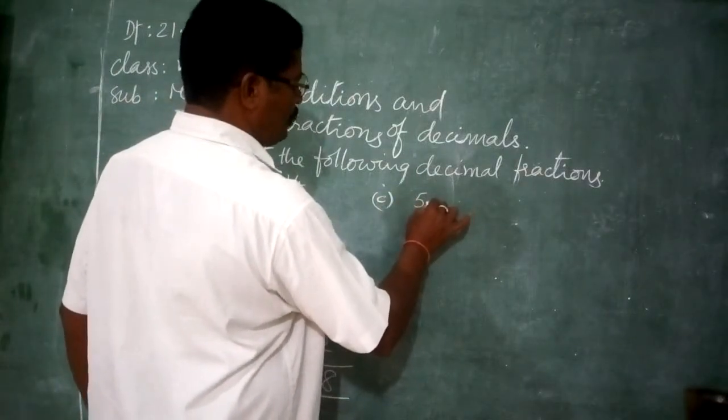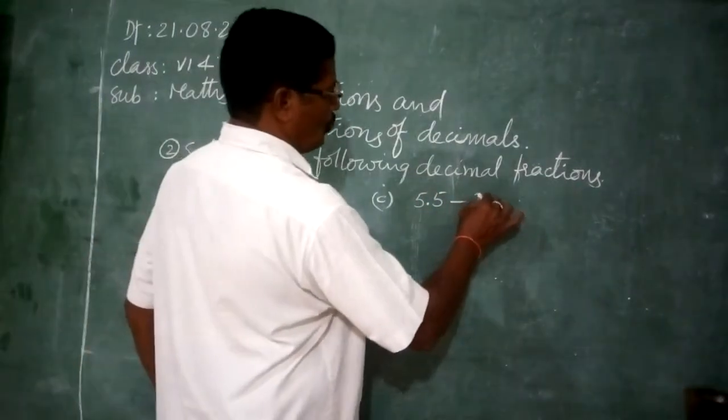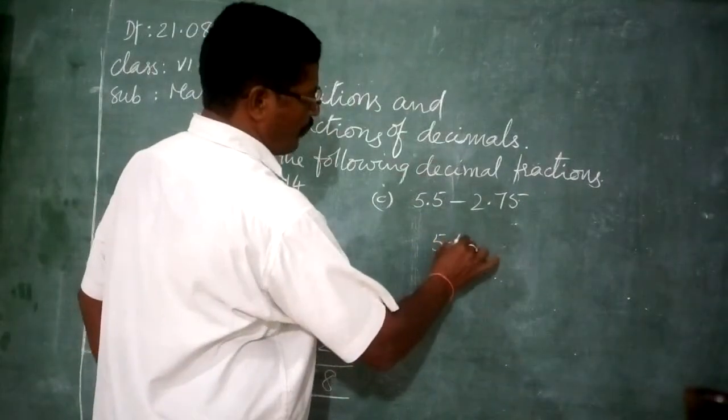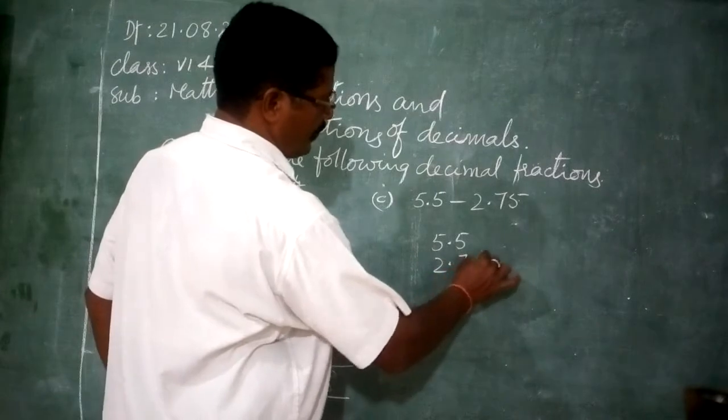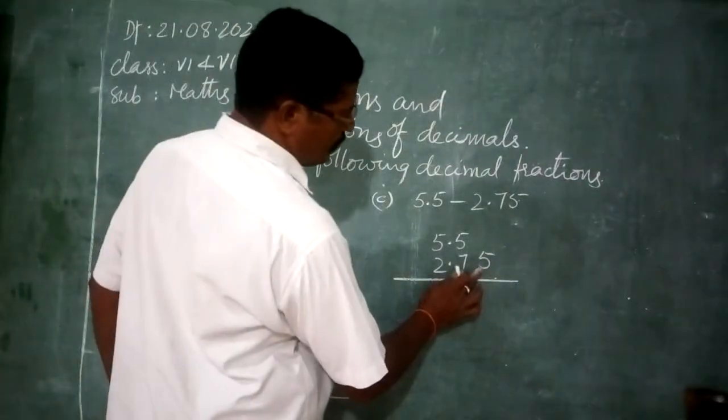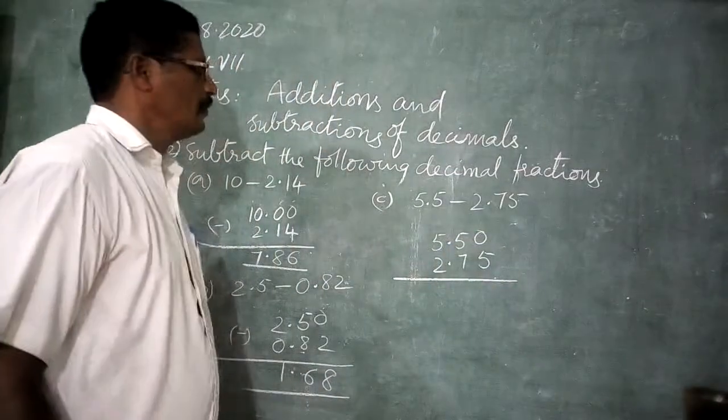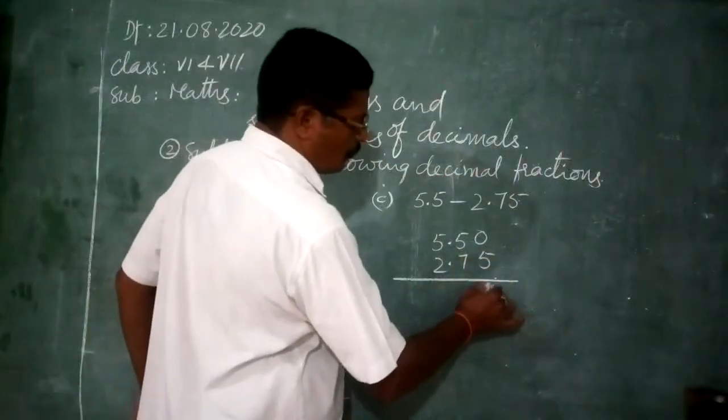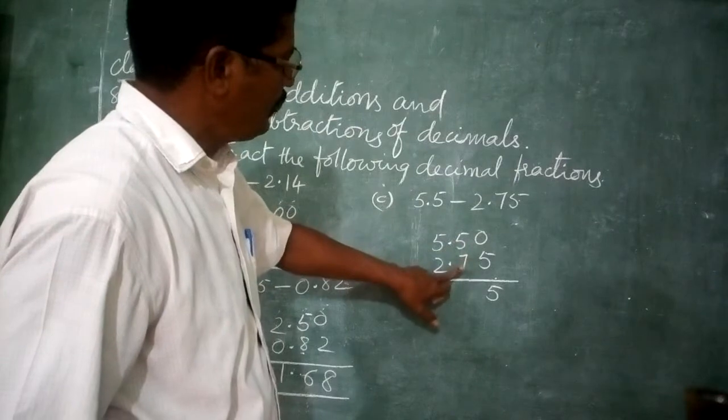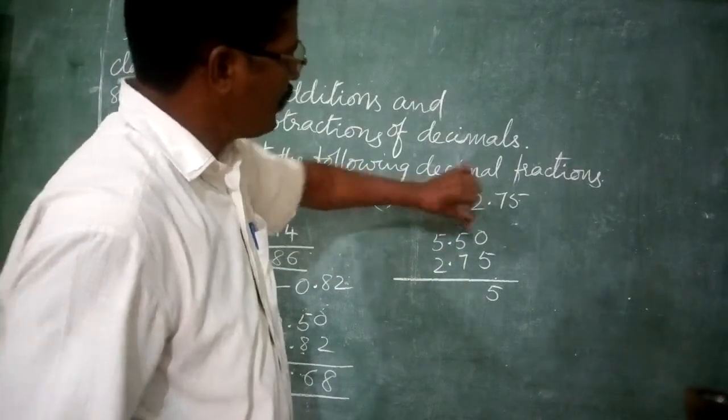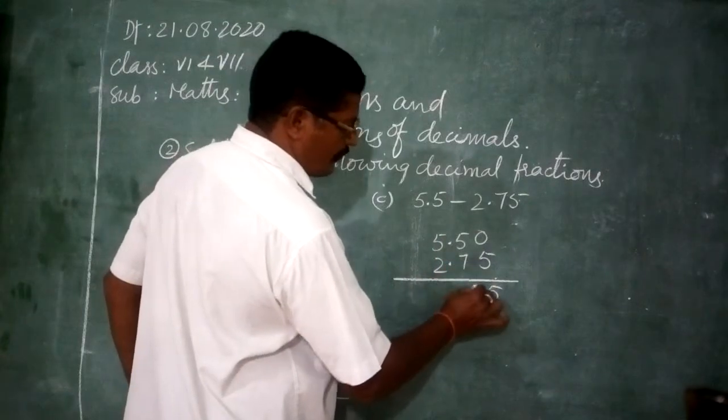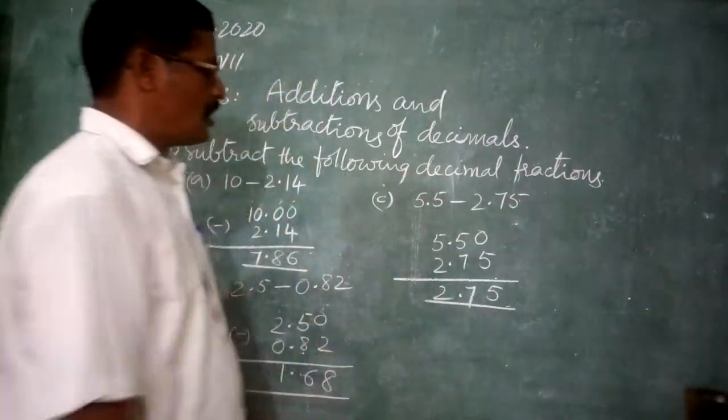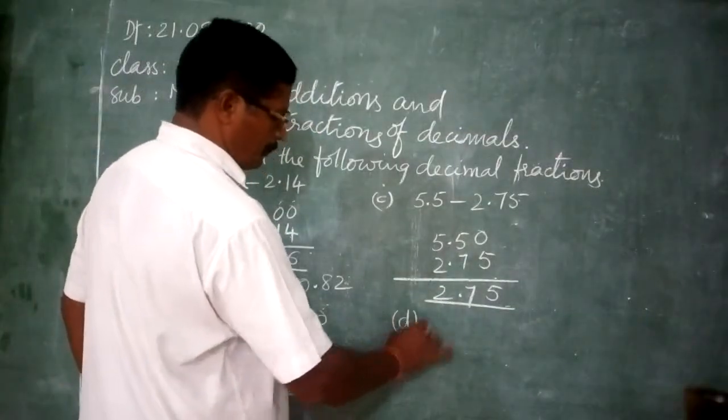5.5 minus 2.75. 5.5, 2.75, 5. Now here is the 100th place but there is no. So put 0 here. Now borrowing from here to here. How much? 10 minus 5, 5. Here remaining 4 only. But here is 7. Borrowing from here. 14 minus 7. Here remaining 4 only. 4 minus 2, 2. This is the answer. One more question.